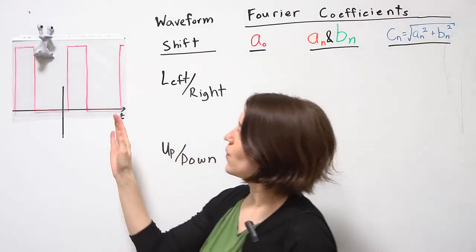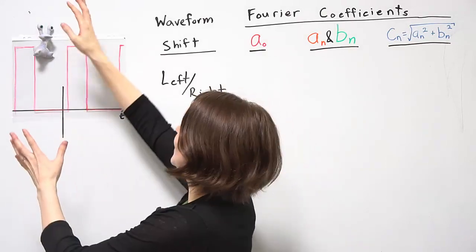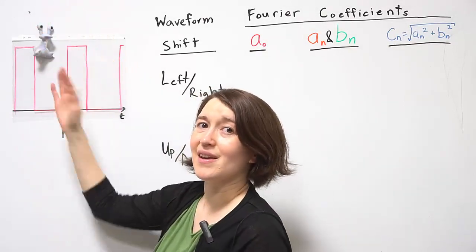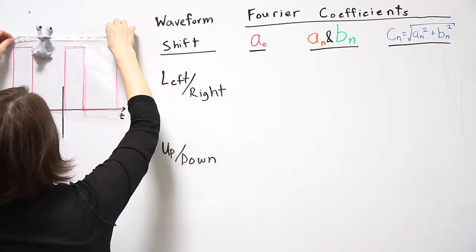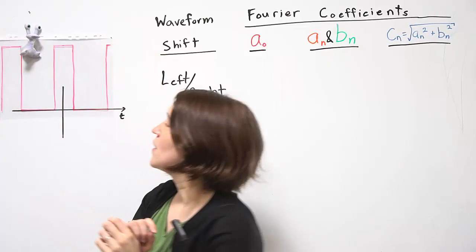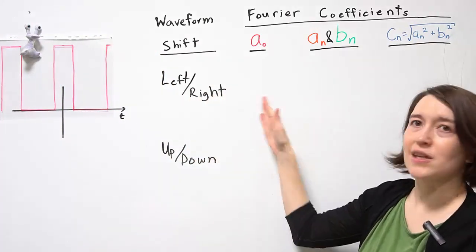Let's say we want to shift this waveform and make it symmetric across the y-axis, so an even waveform. Now it's an even waveform, but how does it affect each of these coefficients?